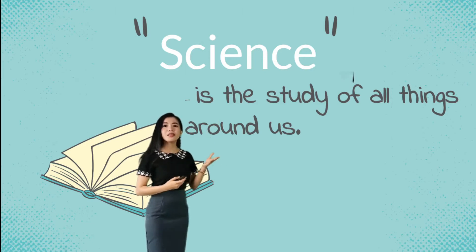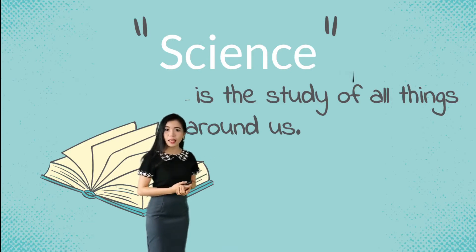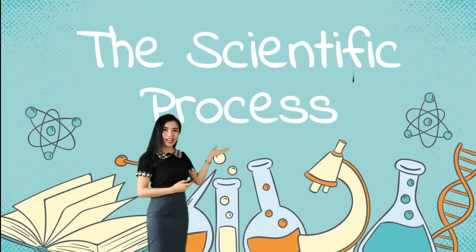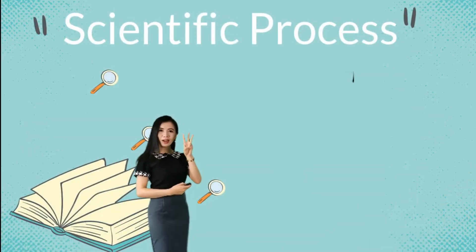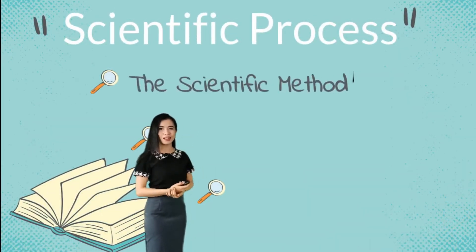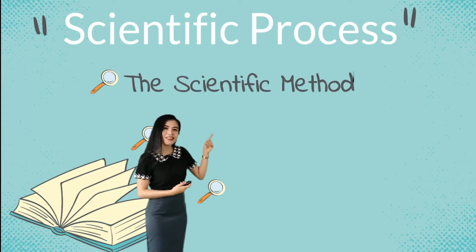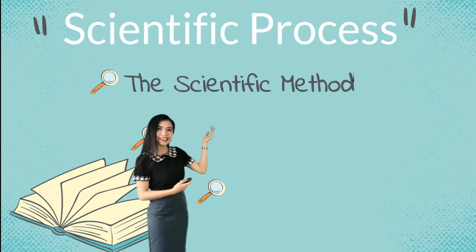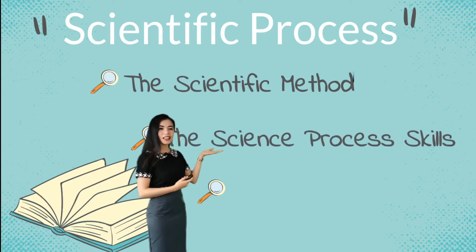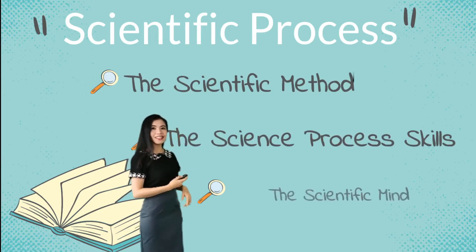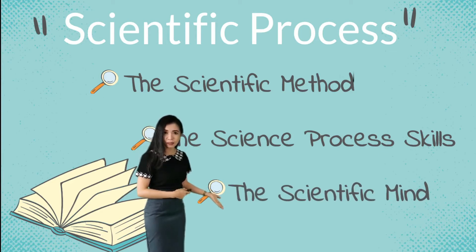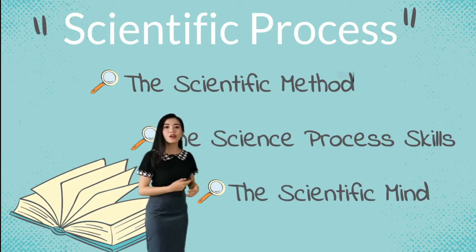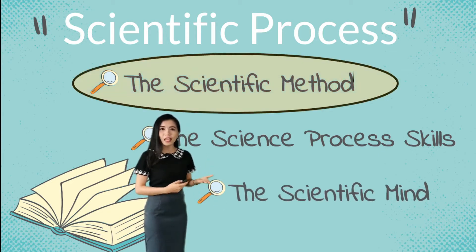We study the things around us using a step-by-step process and this process is called the scientific process. The scientific process is grouped into three types: the scientific method, the science process skills, and the scientific mind. But for this video, we are just going to talk about the scientific method.